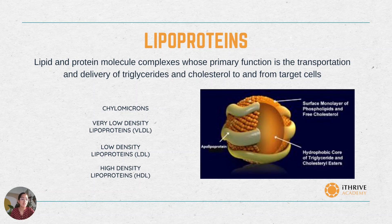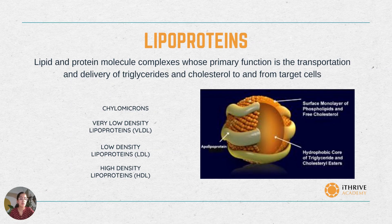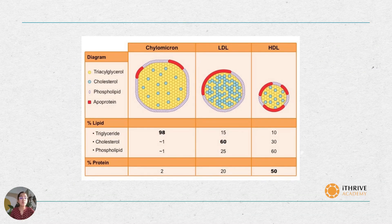LDL carries the majority of the cholesterol that is in the circulation. Next, we discuss HDL or high-density lipoprotein. These are particles which play an important role in reverse cholesterol transport from tissues to the liver, as it absorbs cholesterol and carries it back to the liver to be flushed out of the body. This is one potential mechanism by which HDL prevents the buildup of plaque.